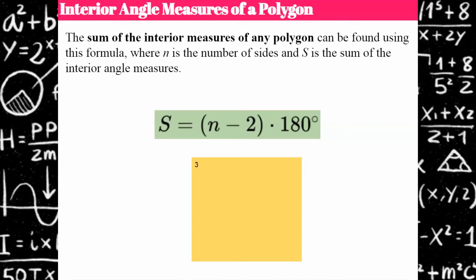In a previous video I proved that a three-sided polygon — a triangle — has interior angles summing to 180 degrees. A four-sided polygon has four 90-degree angles summing to 360 degrees. As we increase the sides by one, the sum of interior angles increases by 180 degrees. So a five-sided polygon has a sum of 540, and a six-sided polygon has a sum of 720.